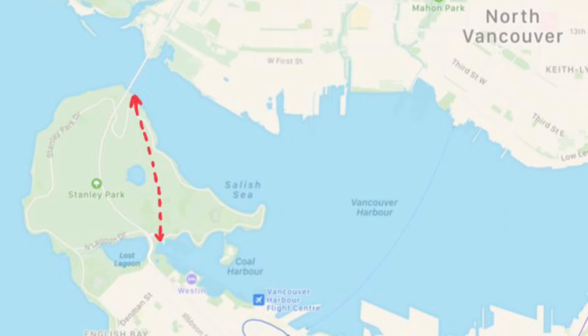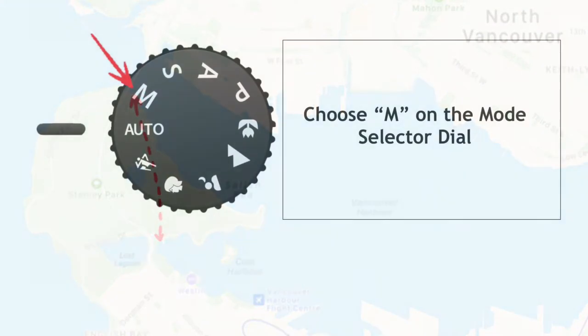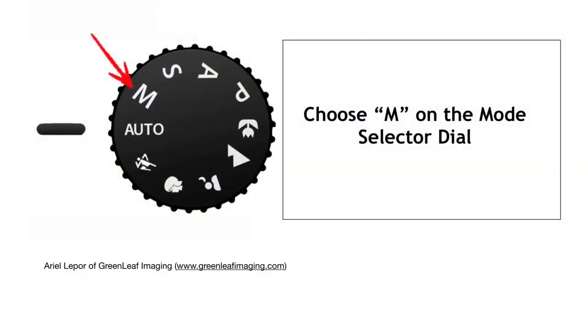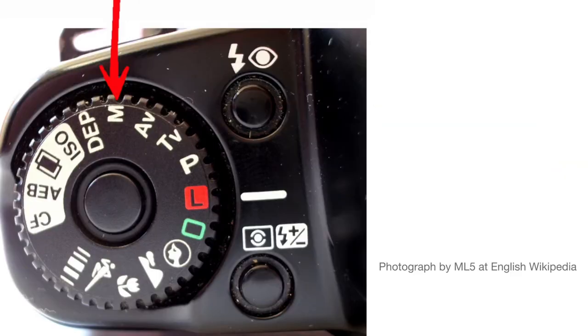Go to Stanley Park twice: the first time to hunt for good locations, and the second time to choose your final spot. Using manual mode will give you better control over your image and your camera.